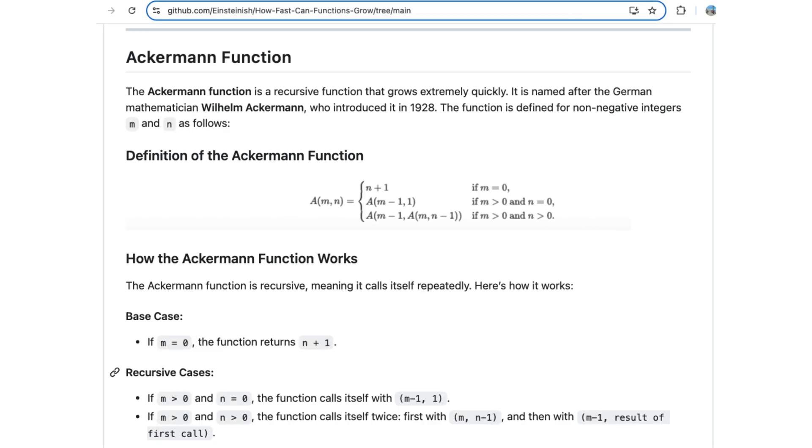Our fourth function, which is the final function, is Ackermann function. It is a recursive function that grows extremely quickly. It is named after the German mathematician Ackermann, who introduced it in 1928. The function is defined for non-negative integers m and n as the following. The Ackermann function is recursive, meaning it calls itself repeatedly.